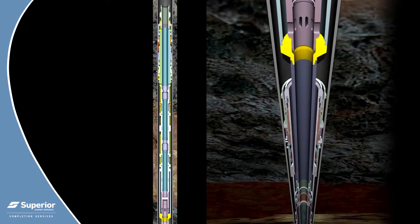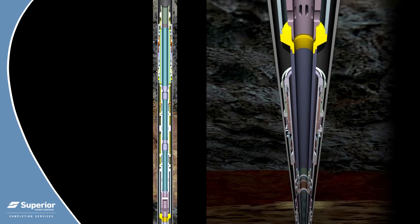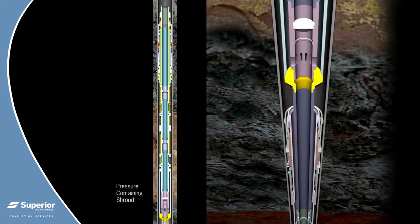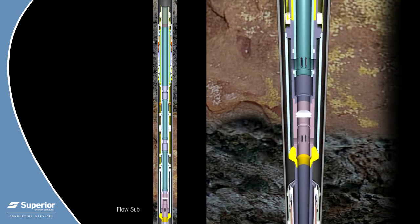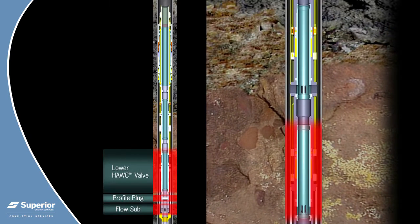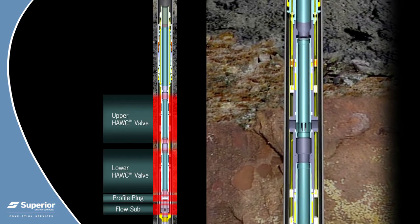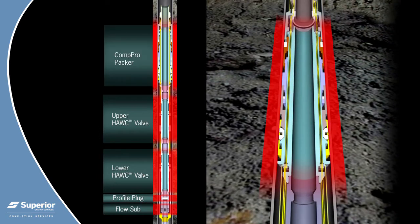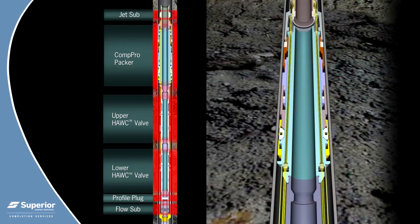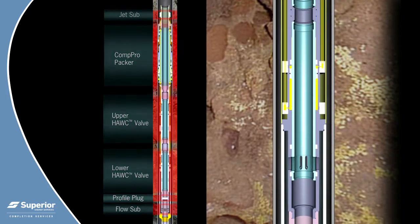Other essential elements of the HAWC well system include: seal assembly landed in the annular flow valve, blast joints, pressure containing shroud, flow sub, profile plug, lower hydraulic multi-service valve in the open position, upper hydraulic multi-service valve in the closed position, brake assembly, comp pro packer, jet sub or cutting area for recovery, and control lines and control line connector sub for all flat pack connectors.